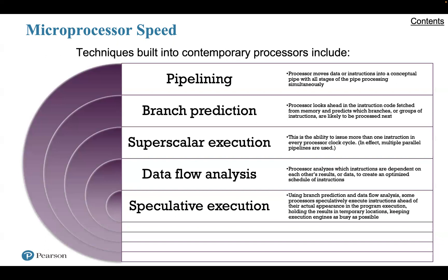But the raw speed of the microprocessor will not achieve its potential unless it's fed a constant stream of work in the form of computer instructions. Anything that gets in the way of that smooth flow undermines the power of the processor. Accordingly, while chip makers have been busy learning how to fabricate chips of greater and greater density, processor designers must come up with more elaborate techniques for feeding the monster. Among the techniques built into contemporary processors are the following.